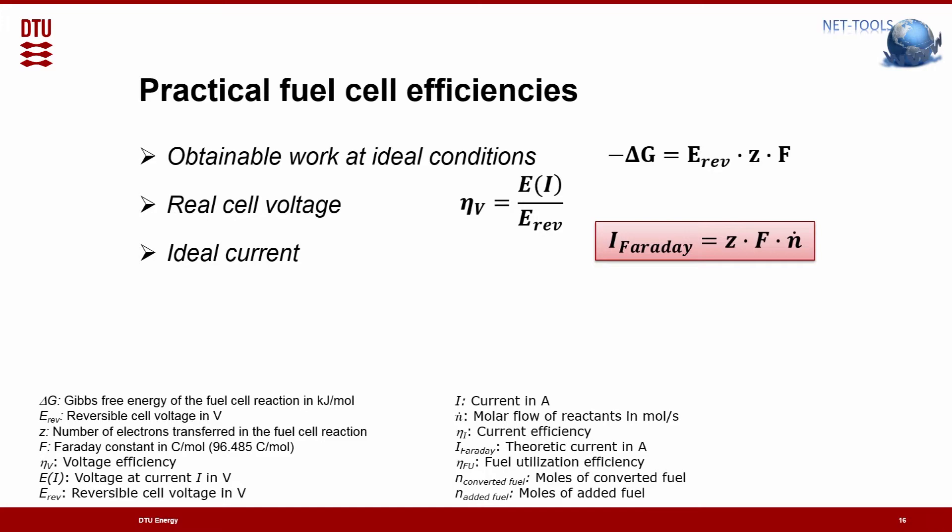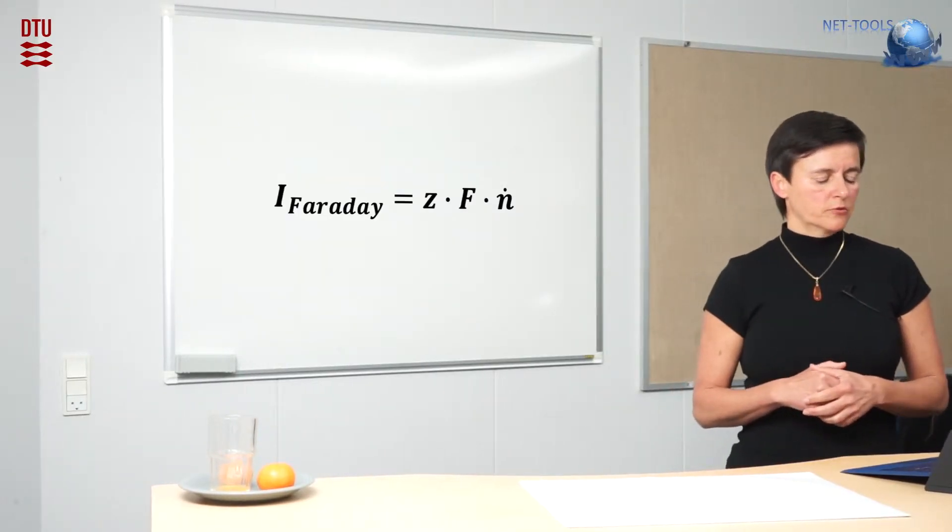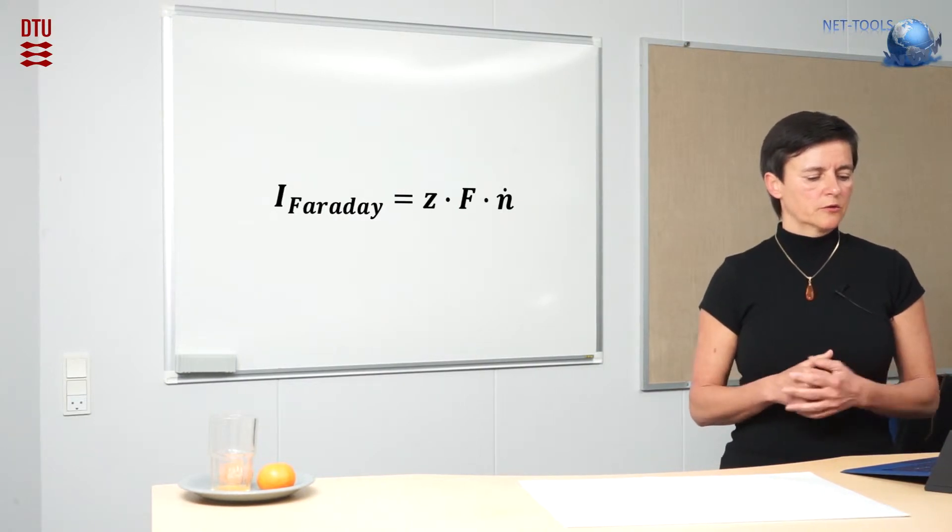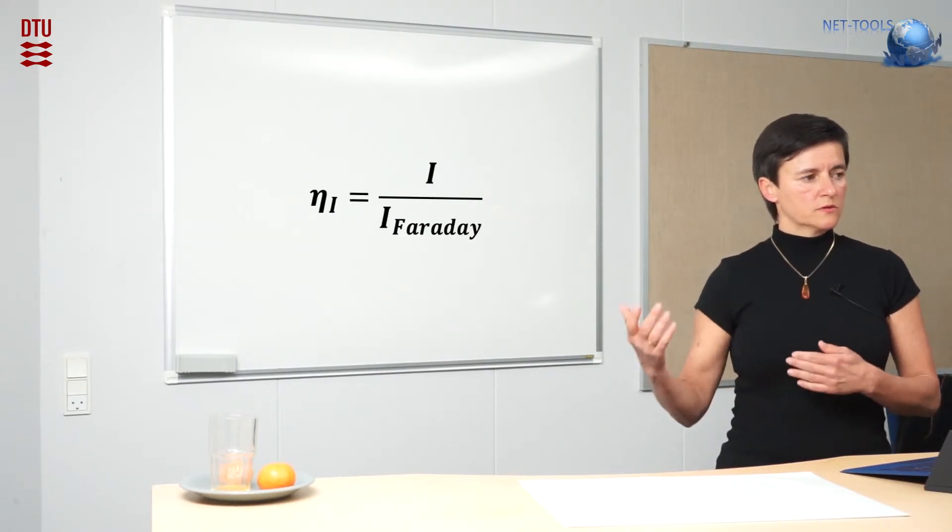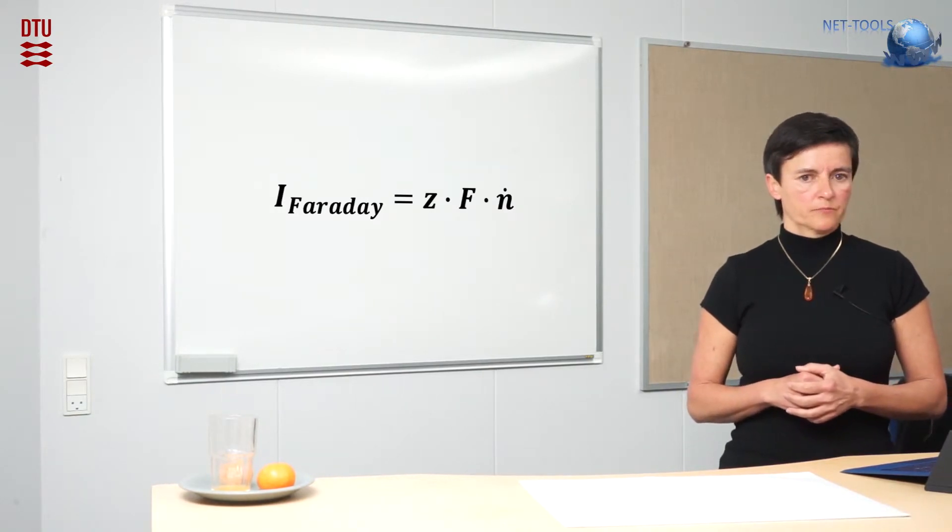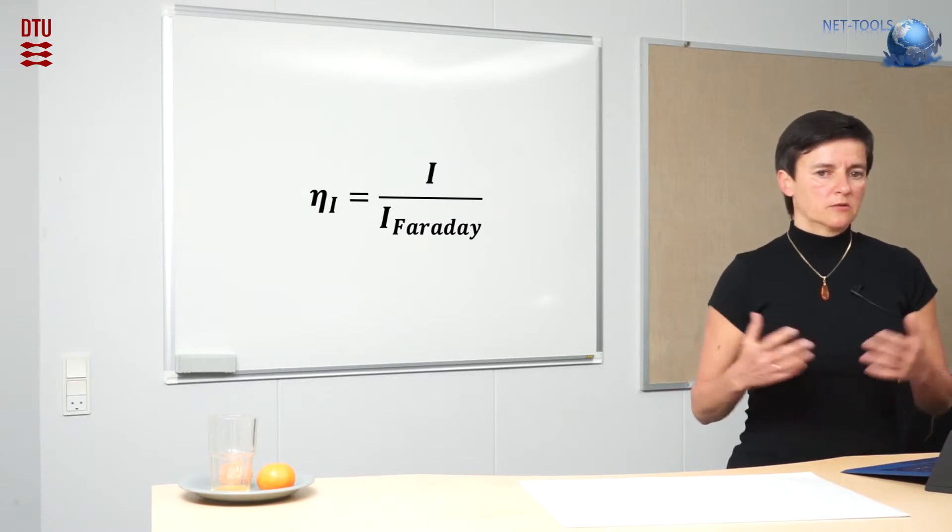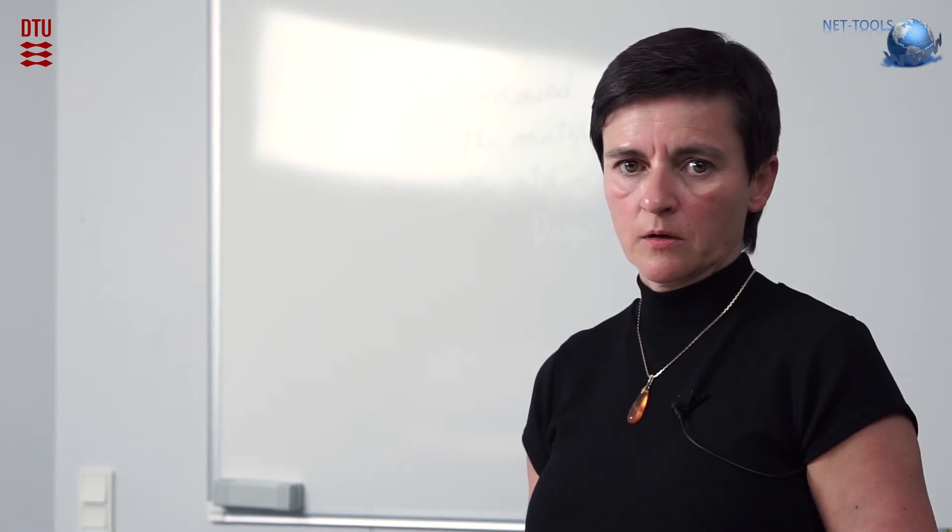Now when you draw a current, so you operate the fuel cell, there is an ideal correlation between the current and the moles you set in, the fuel you provide. This is shown here by Faraday's law. This is the ideal case. But in the real case, you will always have a smaller current in comparison to the ideal current. So the efficiency is also lowered by the current efficiency.